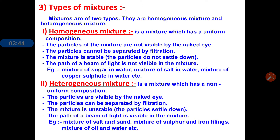In a heterogeneous mixture the particles are unstable — meaning the particles settle down in the beaker. So heterogeneous mixture is unstable in nature. When a beam of light is passed through this mixture, we are able to see the beam of light — the beam of light is visible in this type of mixture.